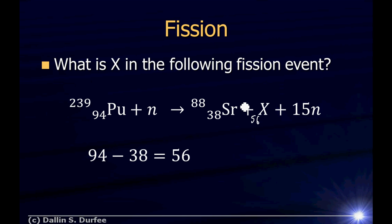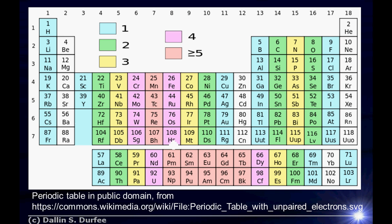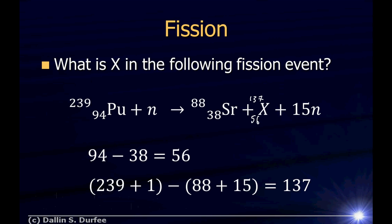But what's its atomic mass number? I started out with 239 plus 1 nucleons, accounted for 88 plus 15 of them, so 239 plus 1 minus 88 plus 15. I'm left with 137, so it must be that I have an atomic mass number of 137. What is element number 56? I go to my table of the elements. There it is. Barium. So X is barium 137.